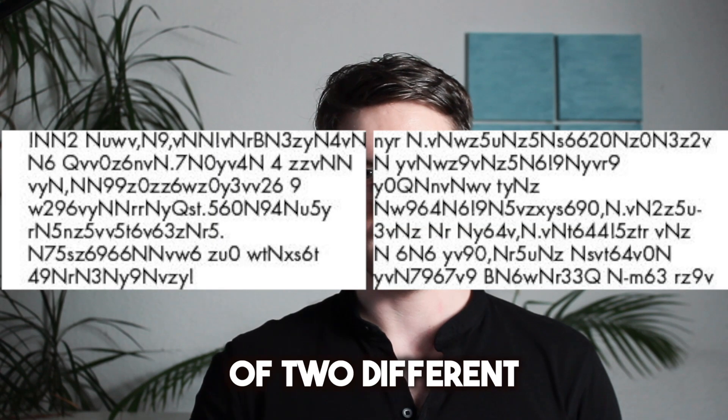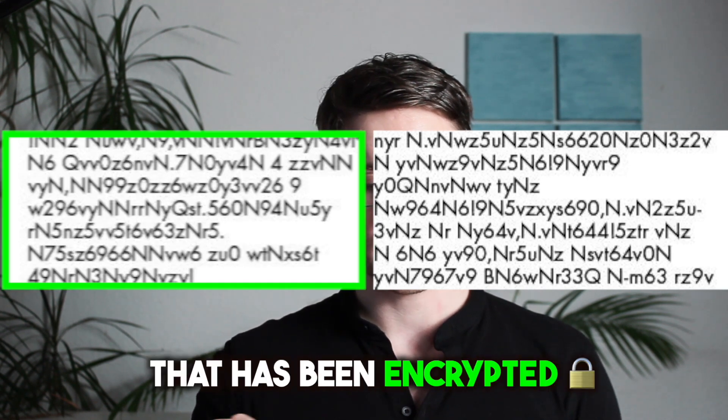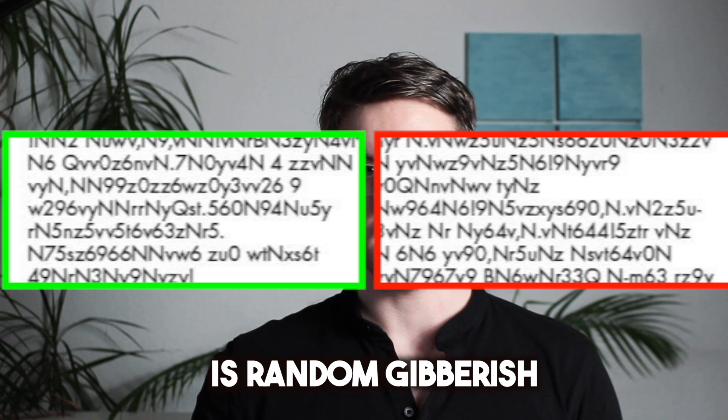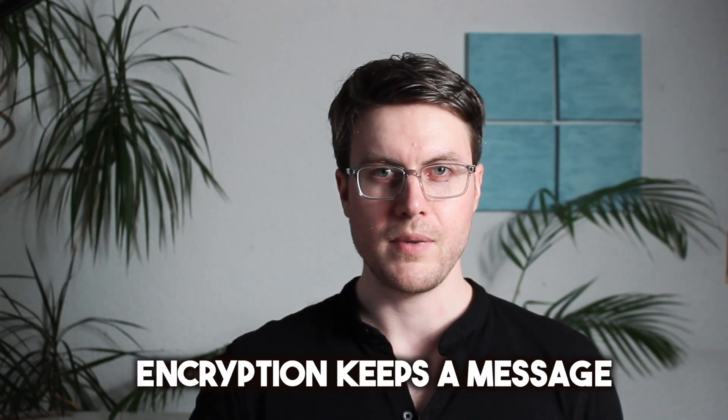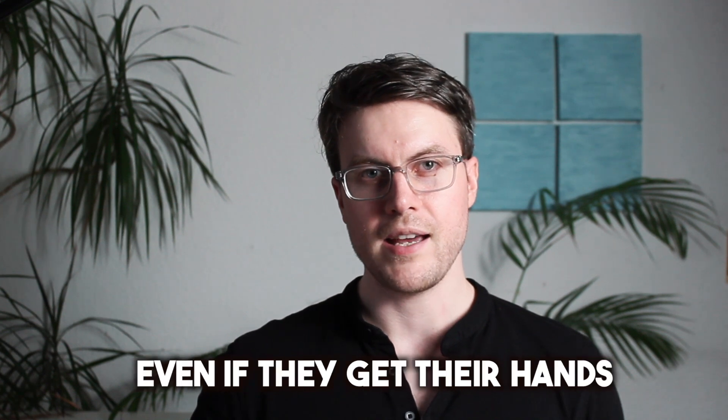Here's an example of two different pieces of texts. The message on the left is a secret message that has been encrypted and the message on the right is random gibberish. Encryption keeps a message secret from other people who cannot decipher it even if they get their hands on the message.